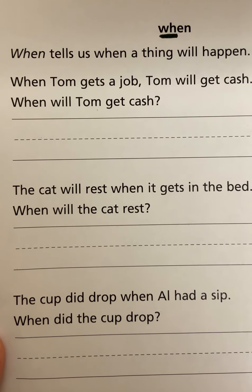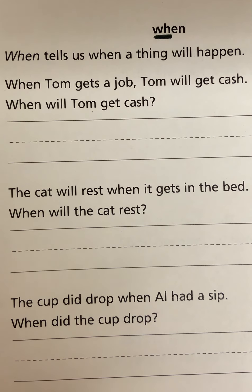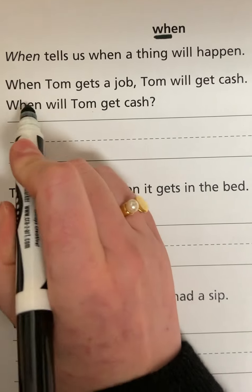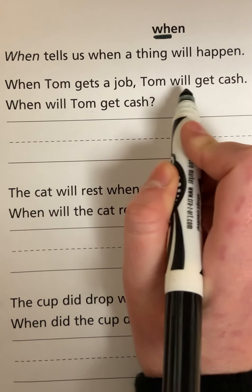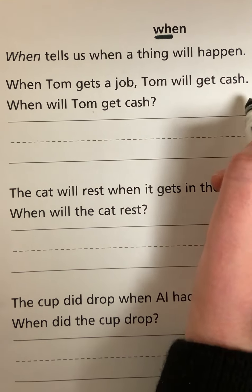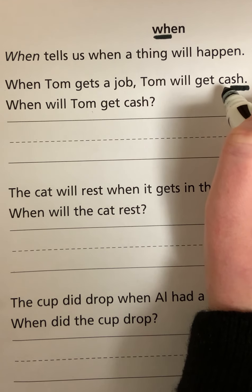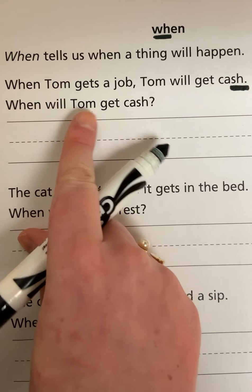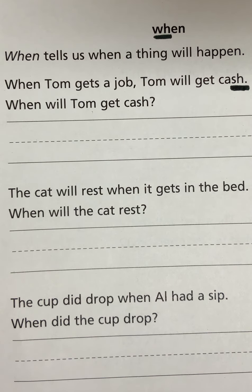If you look, there are one, two, three, four passages that I want you guys to respond to. In this first scenario: 'When Tom gets a job, Tom will get cash.' And note that 'sh' is another digraph we studied — cash. When will Tom get cash? I want us to write full sentences, and I'll go over the first one.